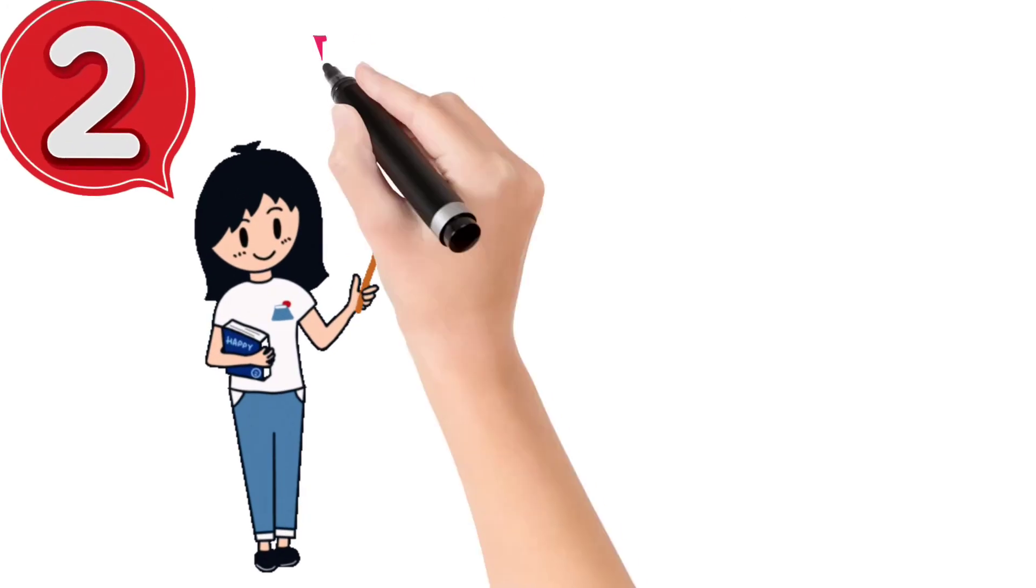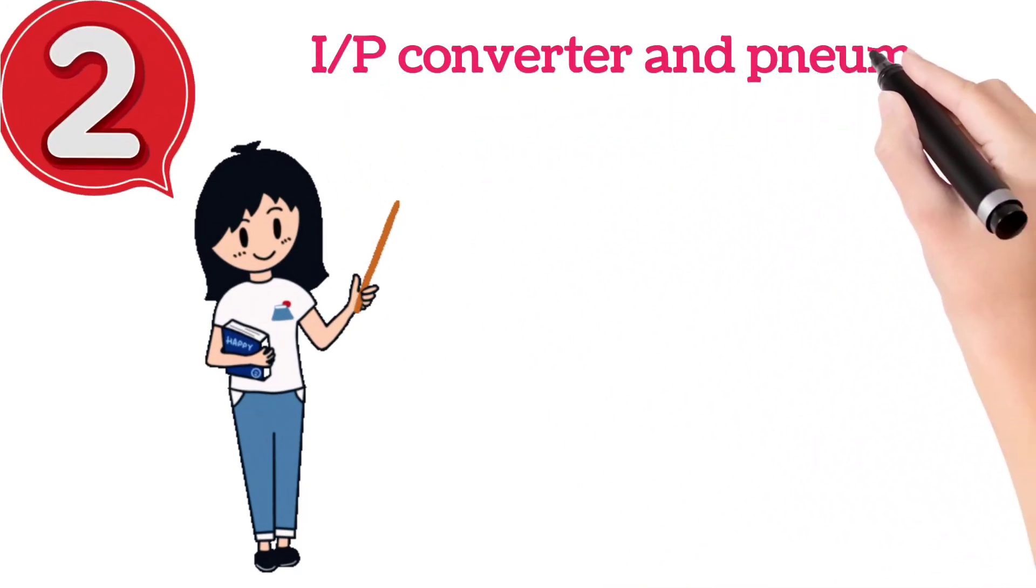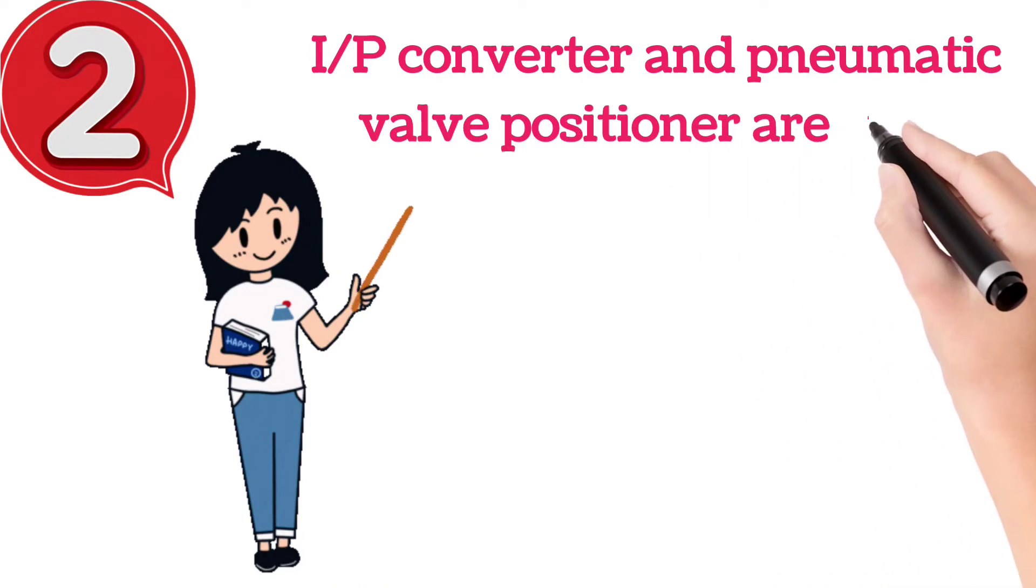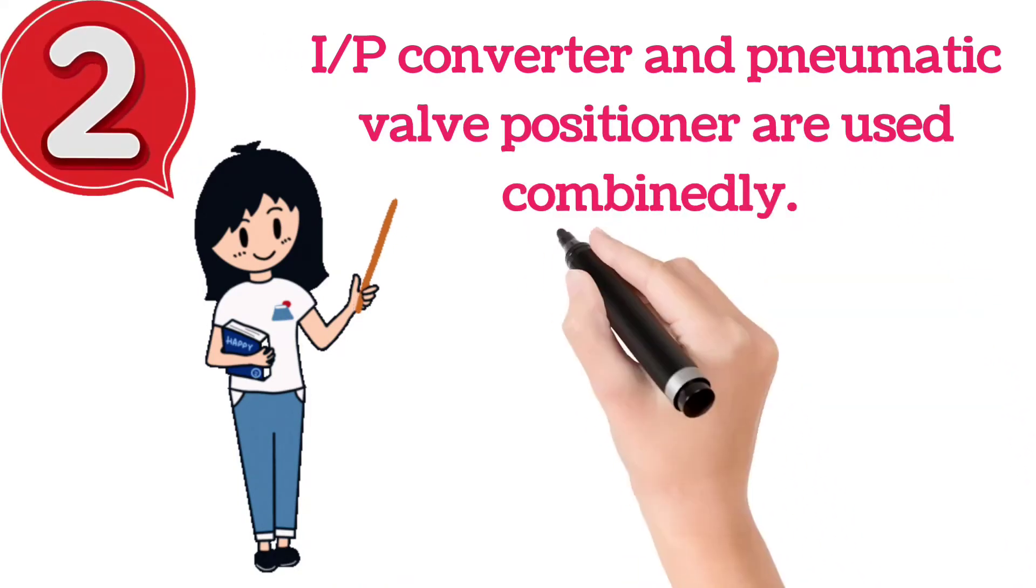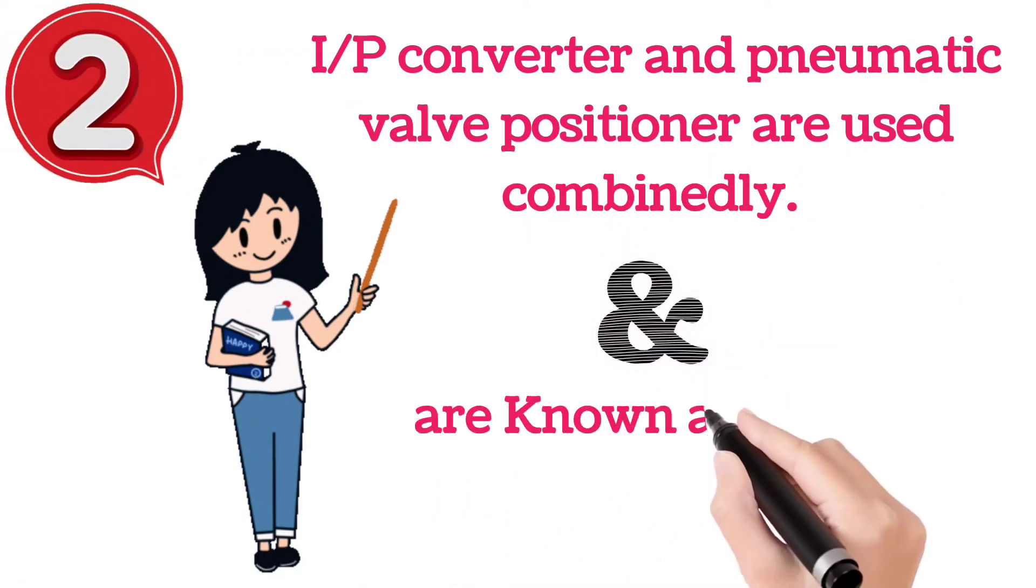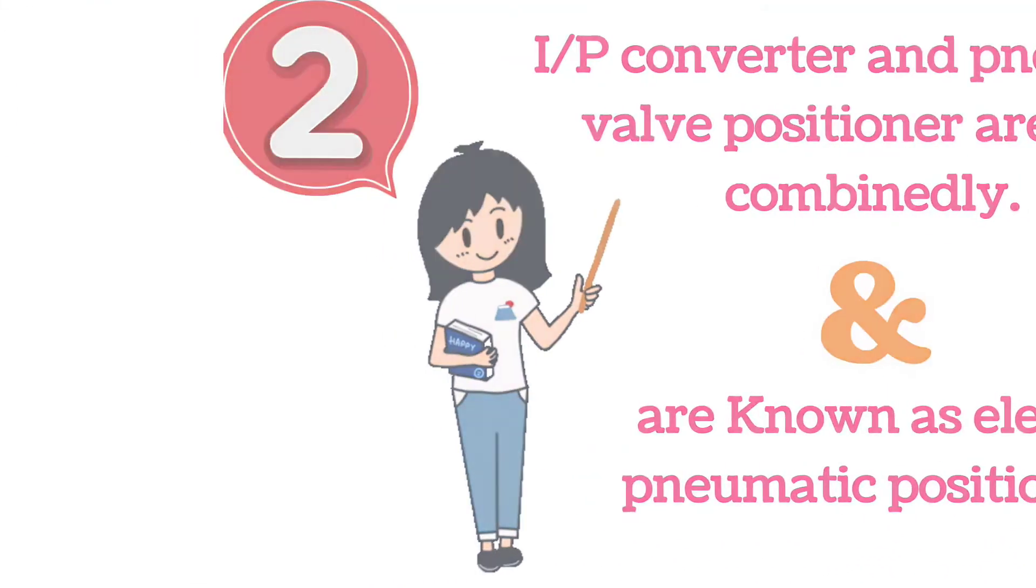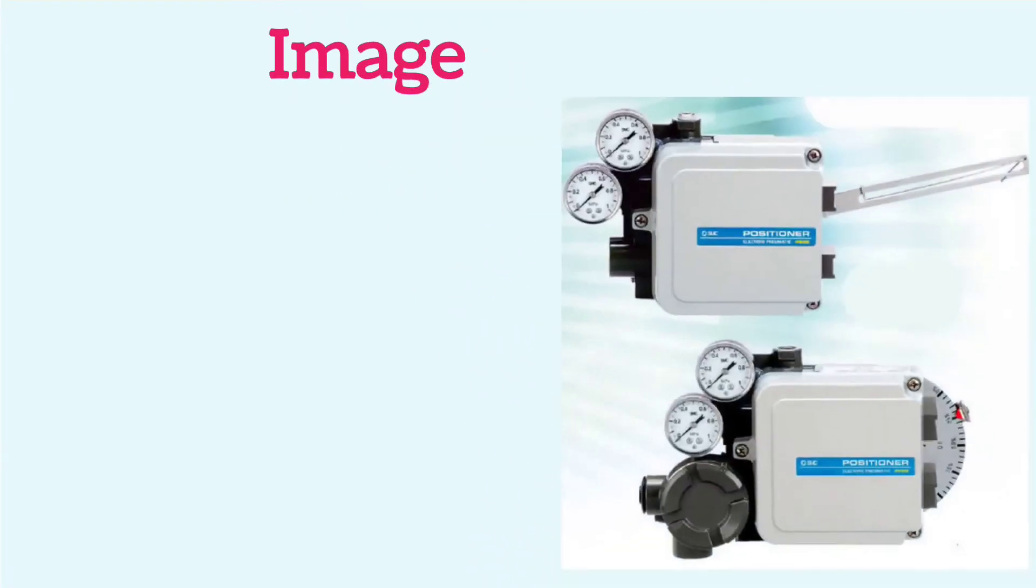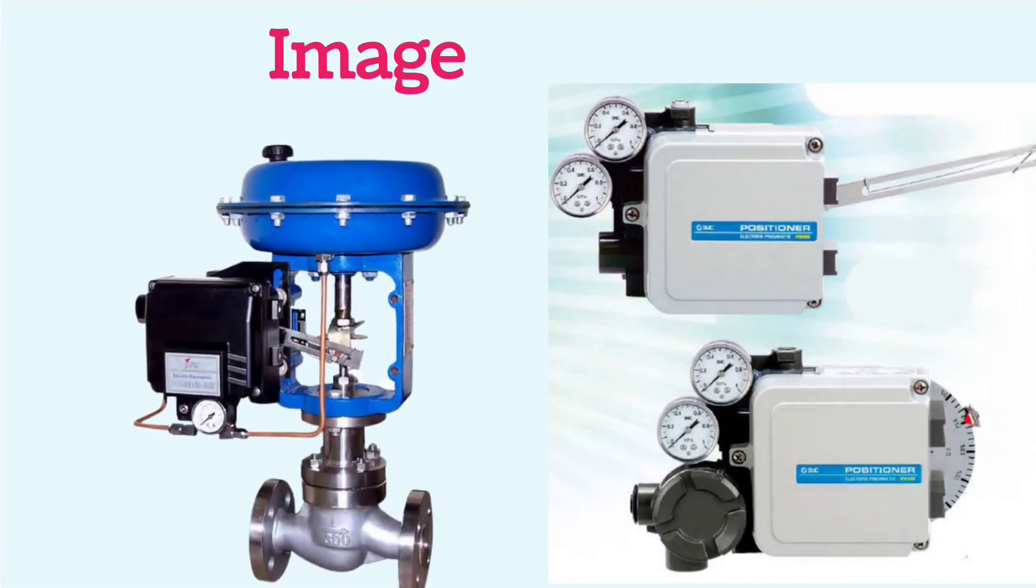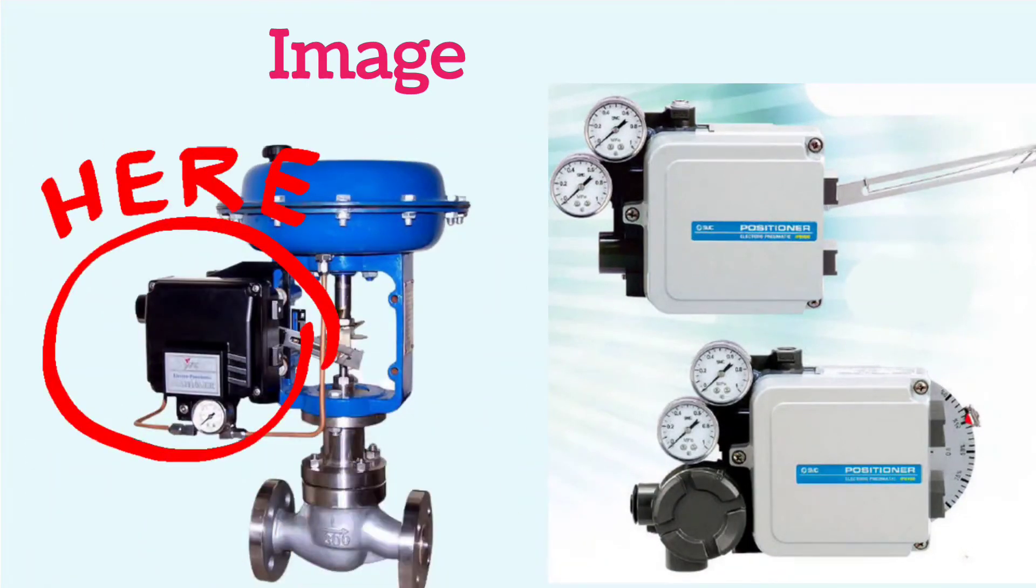And the second is when we use I to P converter and pneumatic valve positioner combinedly. And this combination is known as electro pneumatic positioner. By these images you can see the electro pneumatic positioner.